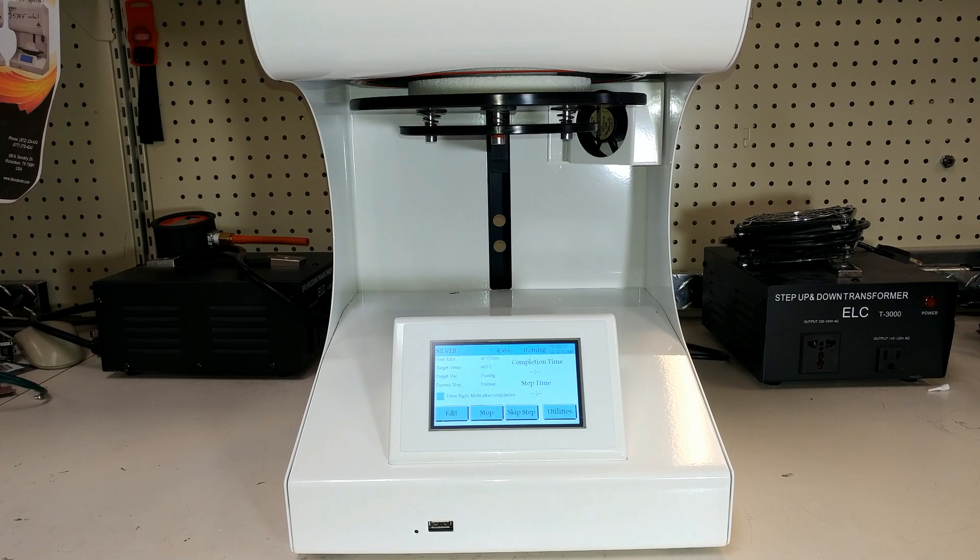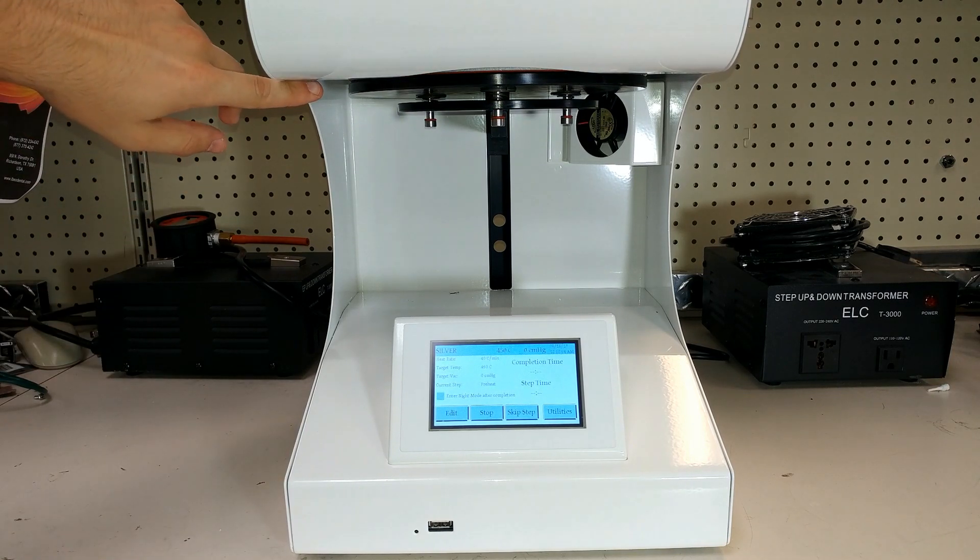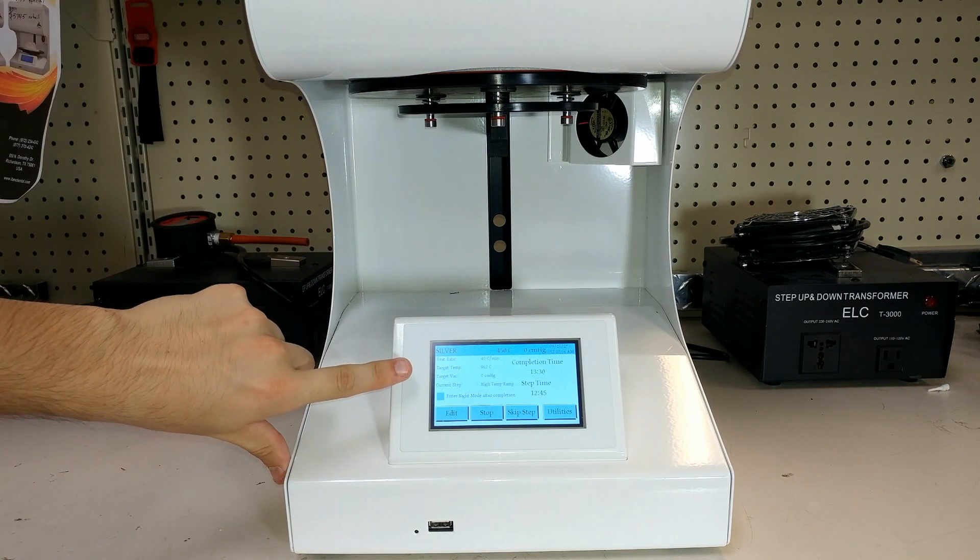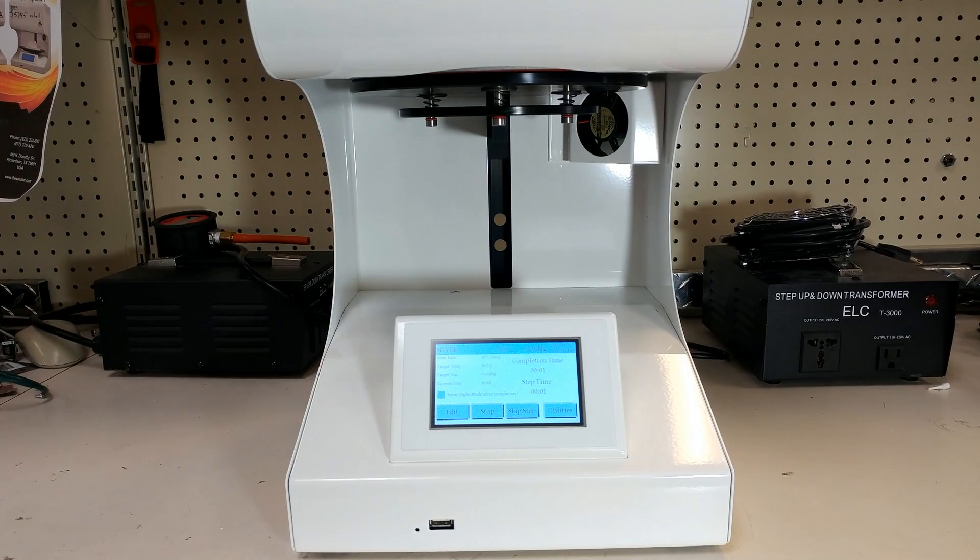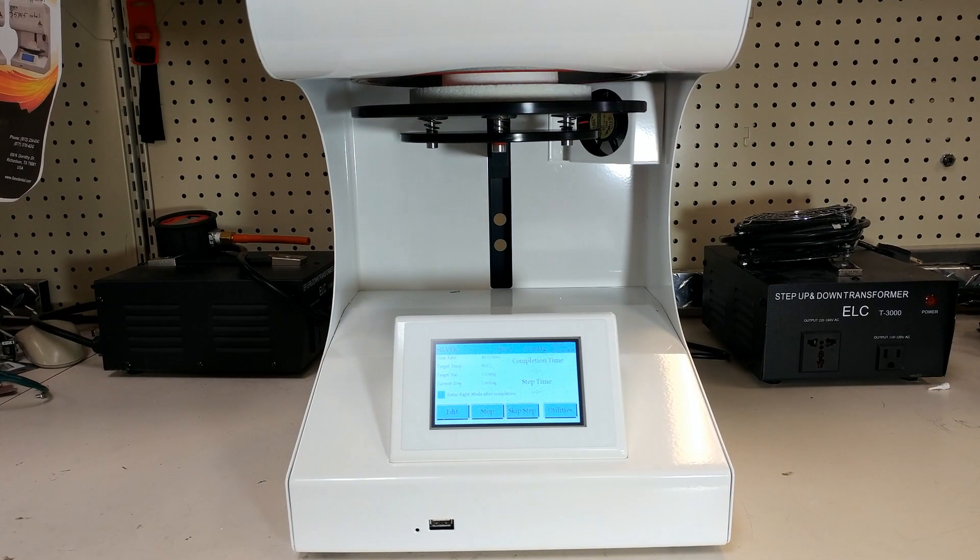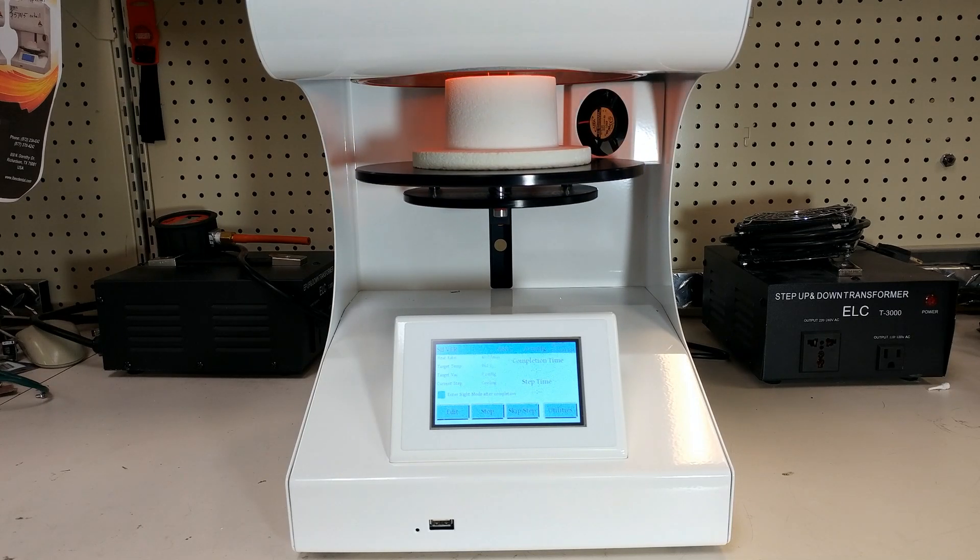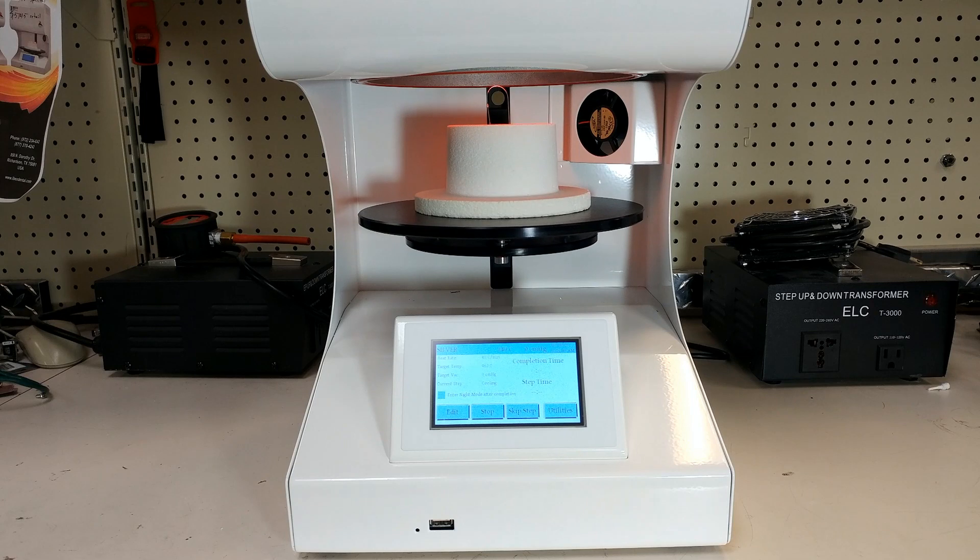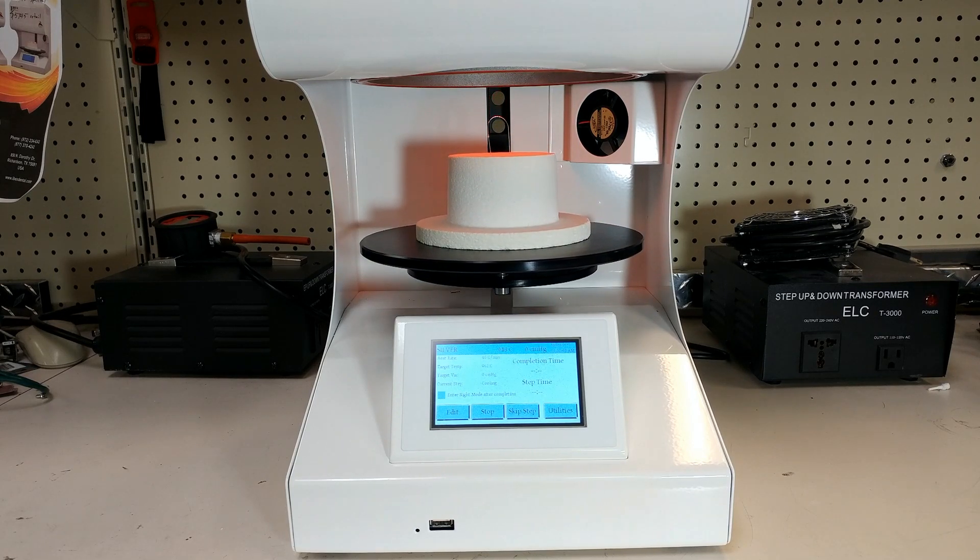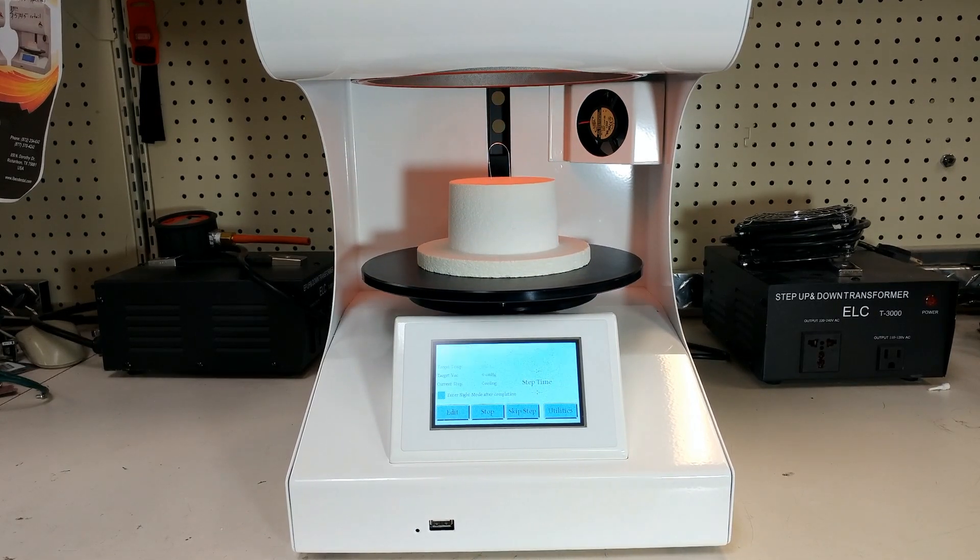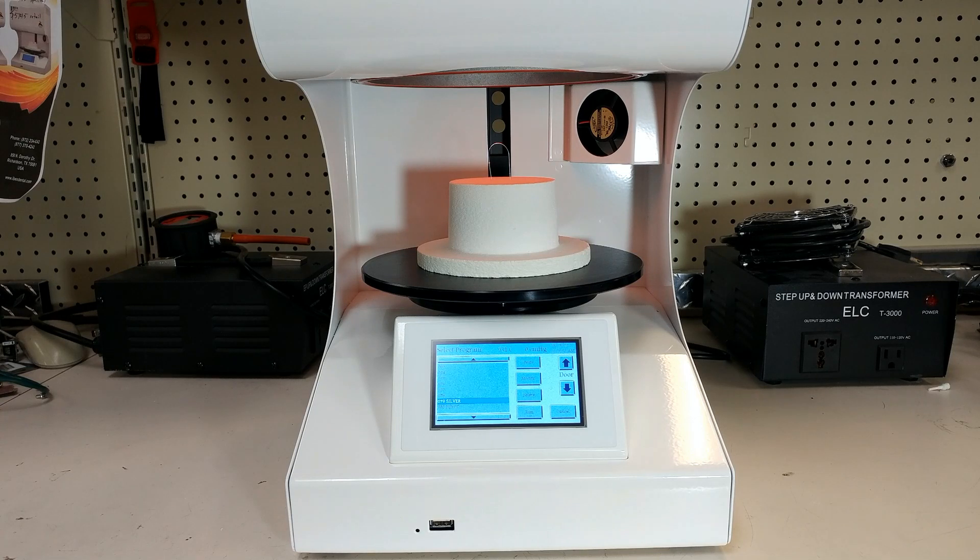As the door hits the very top and hits the upper limit switch, the program will begin. As the program completes, like any other program, the door will start to come down and you will see what you just cooked or melted in this case. What you want to look to see is how your silver melted and it will be in one of three different states.